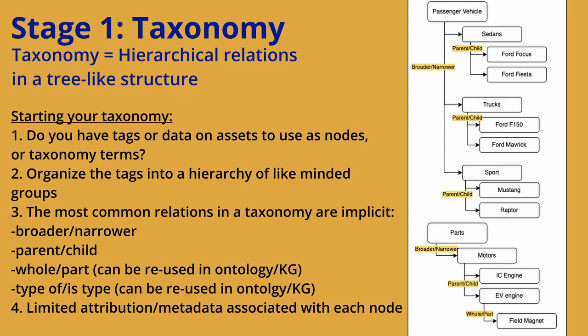A taxonomy is looking at broader and narrower parent-child or whole-part relations. You can see here that passenger vehicles have narrower types — another relationship here is 'type of.' These are not explicit relations; they are more inherent by the hierarchy the taxonomy takes on. Passenger vehicles is the broader or parent of a sport vehicle. And then if we look at the different sports vehicles, there are Mustangs and Raptors — because we're looking at all Ford vehicles in this example.